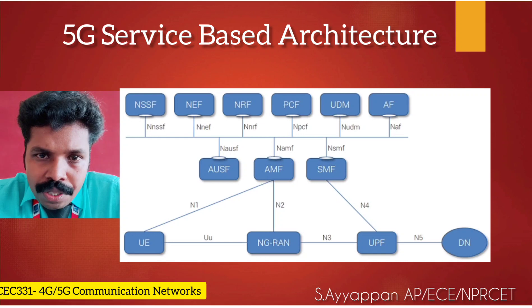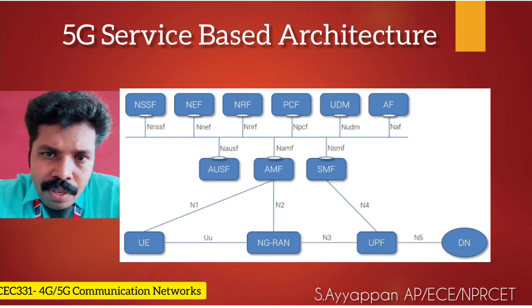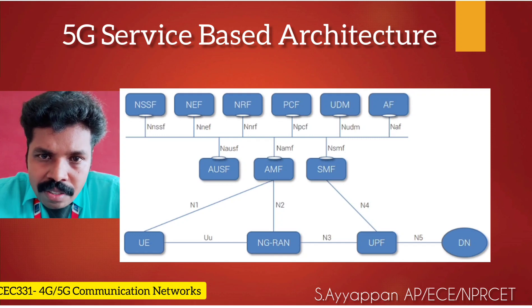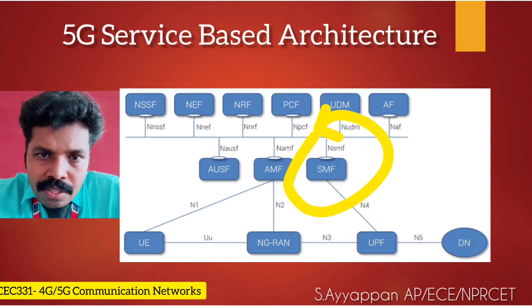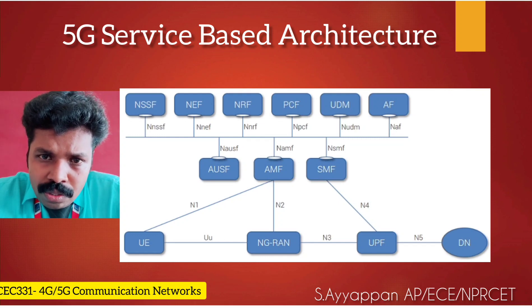Next, we are going to talk about NEF, or Network Exposure Function. In 5G, there are a lot of applications integrated with the network. Whenever third-party applications need to get information from the 5G core network and influence traffic, they have to connect via an API framework through the NEF. NEF gets information from the third-party application and provides commands to the PCF. The Policy Control Function then creates quality of service policies and passes them to the SMF. SMF creates packet detection rules and sends those rules to UPF, and UPF enforces these rules on the user traffic. This means any third-party application can influence the network behavior for users in the 5G core network.